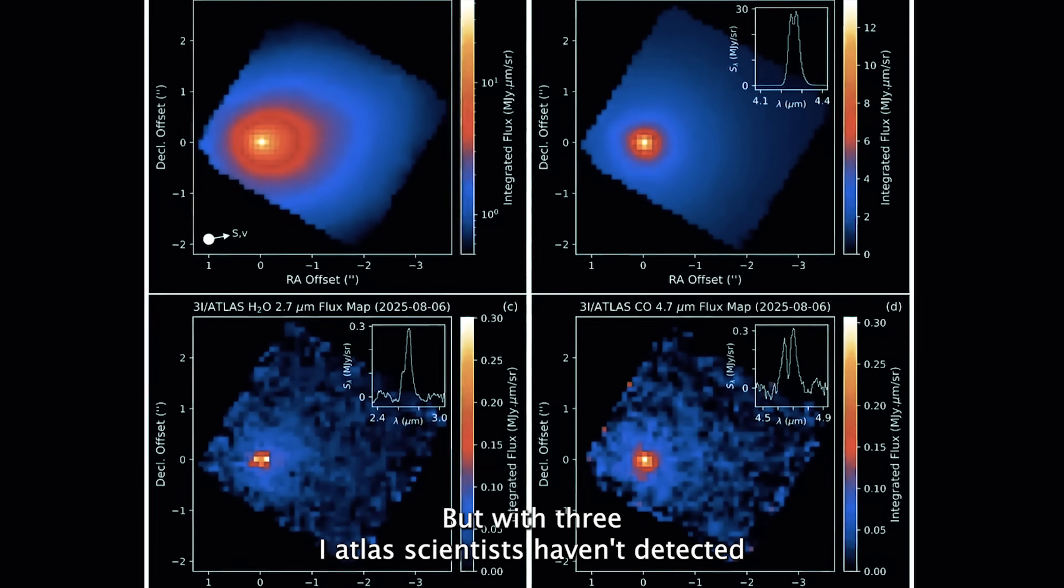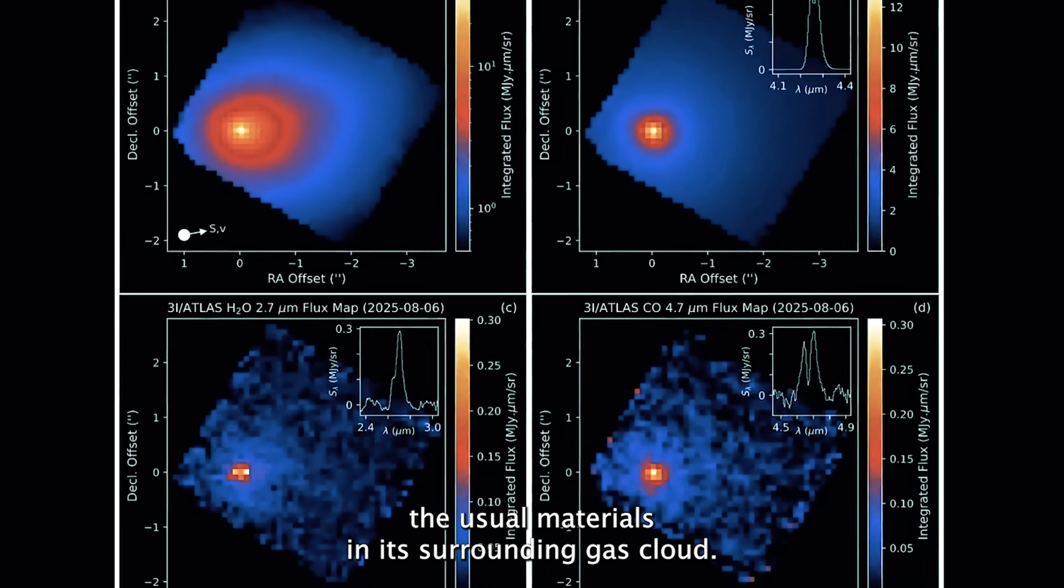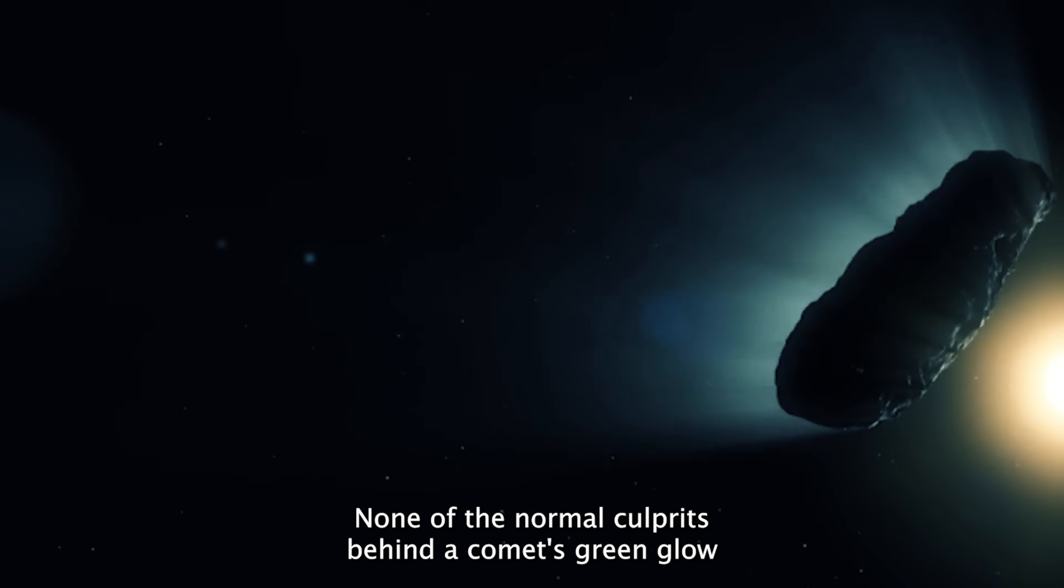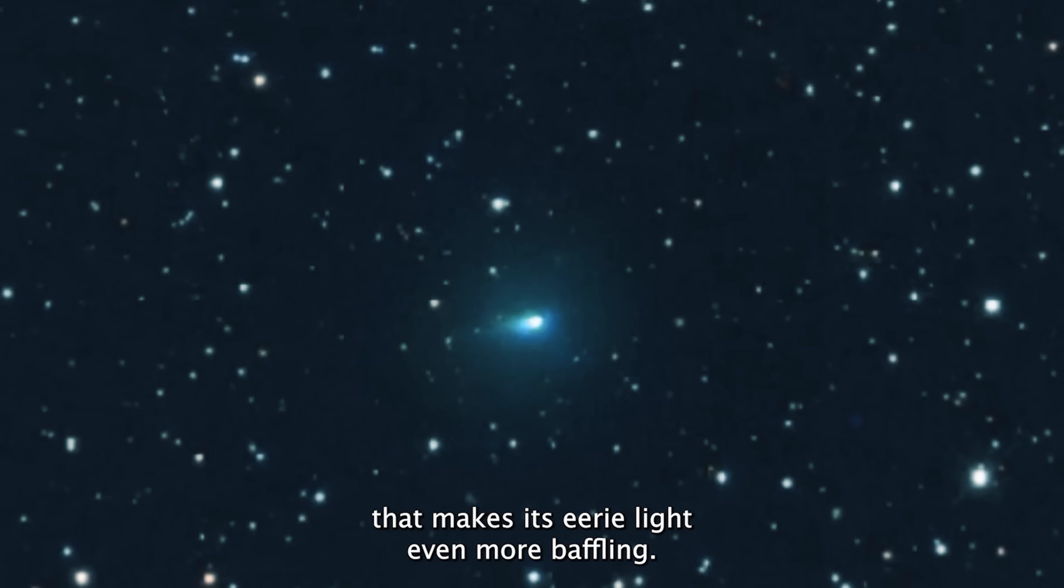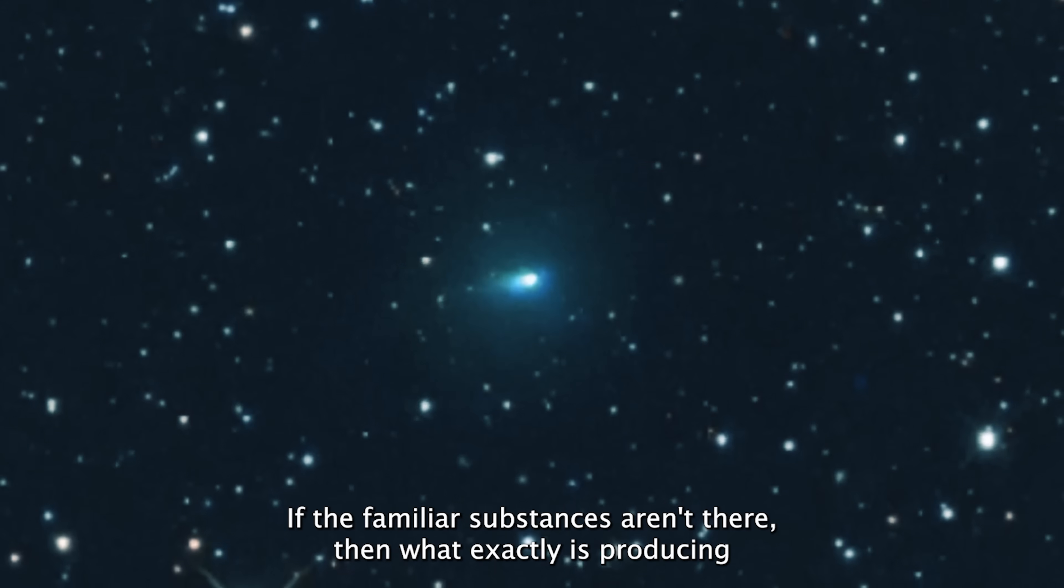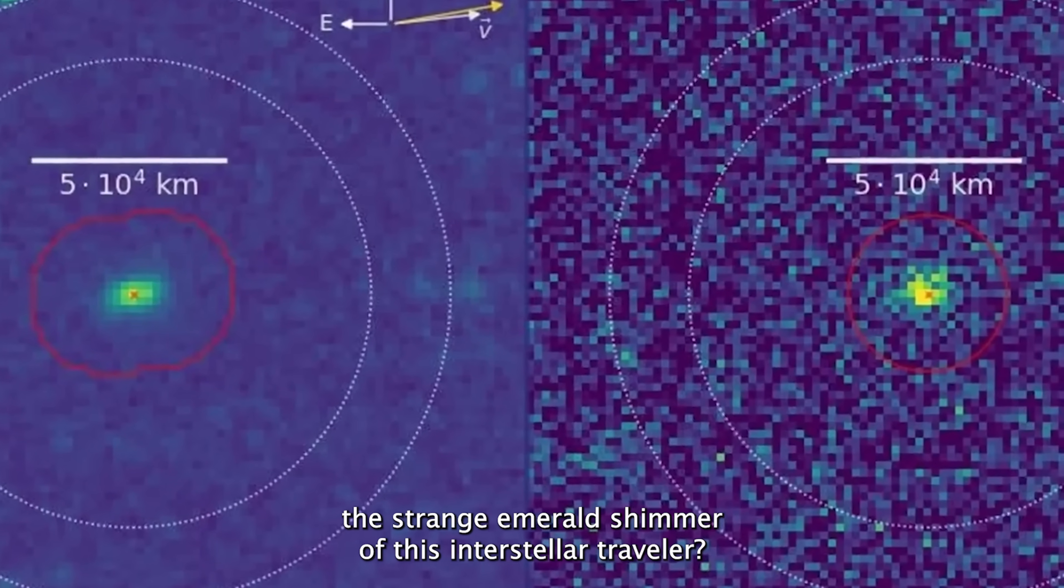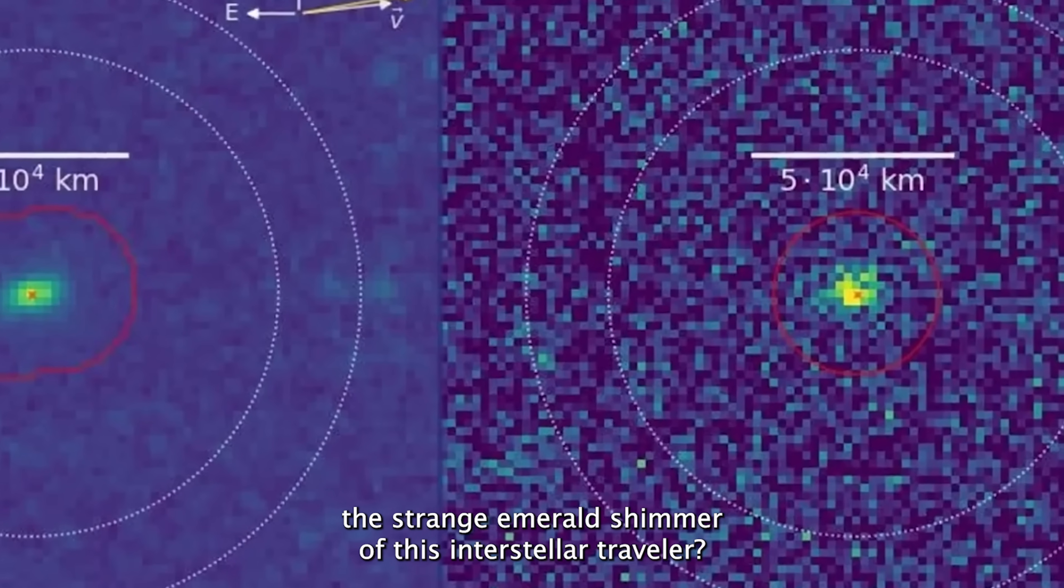But with 3i Atlas, scientists haven't detected the usual materials in its surrounding gas cloud, none of the normal culprits behind a comet's green glow. That makes its eerie light even more baffling. If the familiar substances aren't there, then what exactly is producing the strange emerald shimmer of this interstellar traveler?